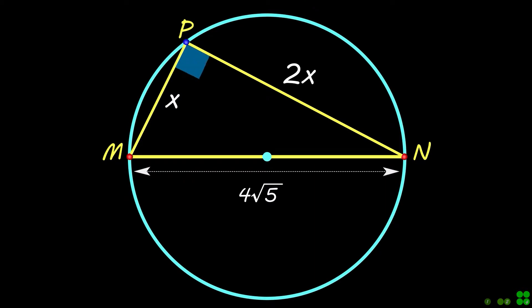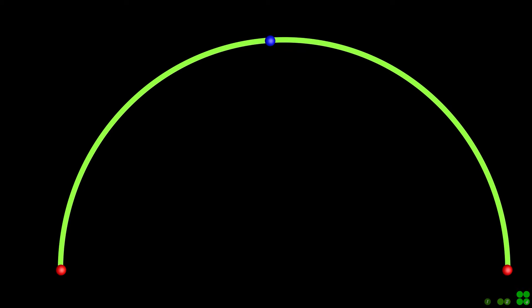The angle at P is a right angle. This is because the angle at the circumference in a semicircle is a right angle, as shown.